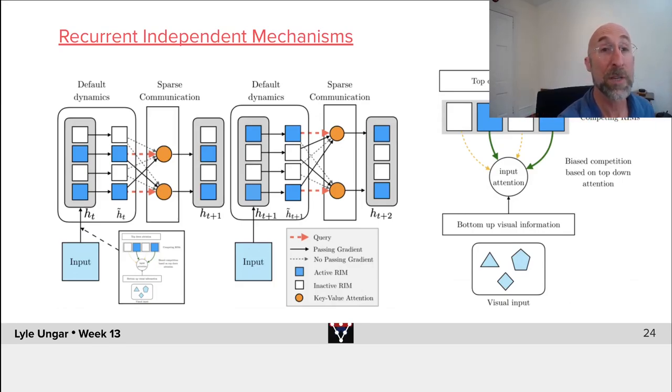There'll be some sort of attention mechanism learned, of course, through gradient descent. And the attention mechanism will say you only get to pass on information from a small number of these different modules in your hidden state that's passed to the next input for time plus one. So this is a very particular kind of recurrent neural net.